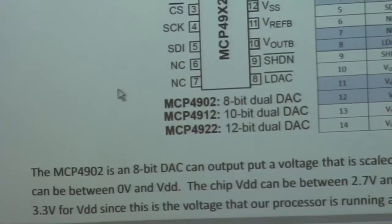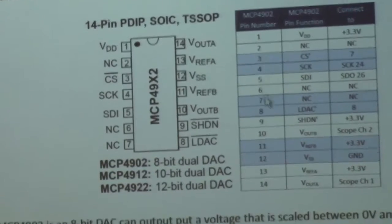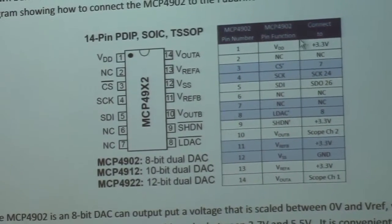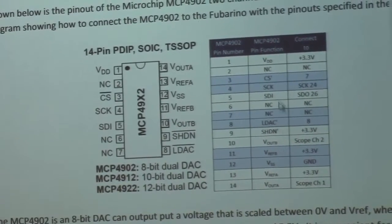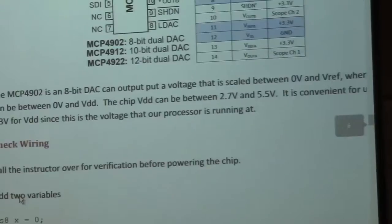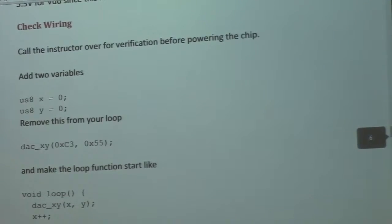Part four, we actually wire up the DAC, and there's a little chart here that shows the pin number of the DAC, one through 14, and what the pin name is and where it needs to connect to on to the Fubarino.